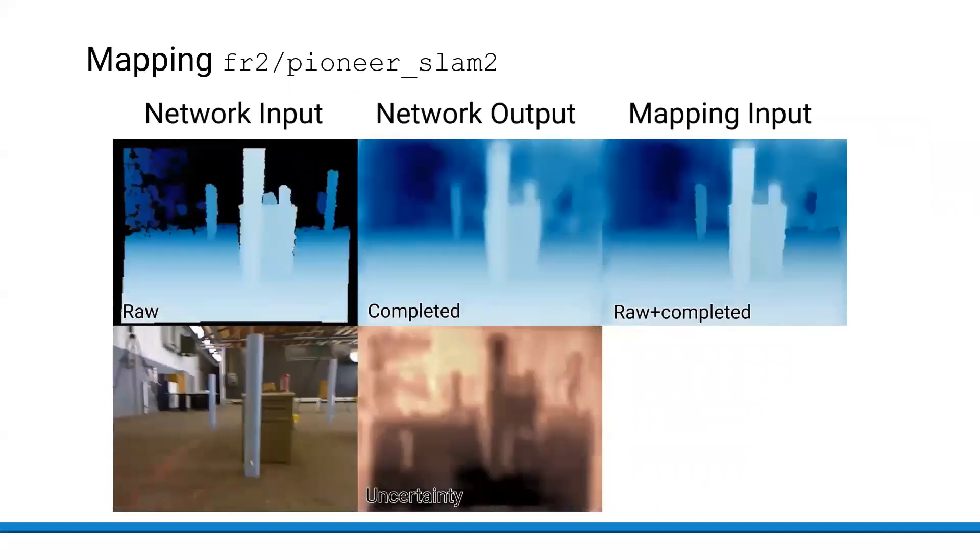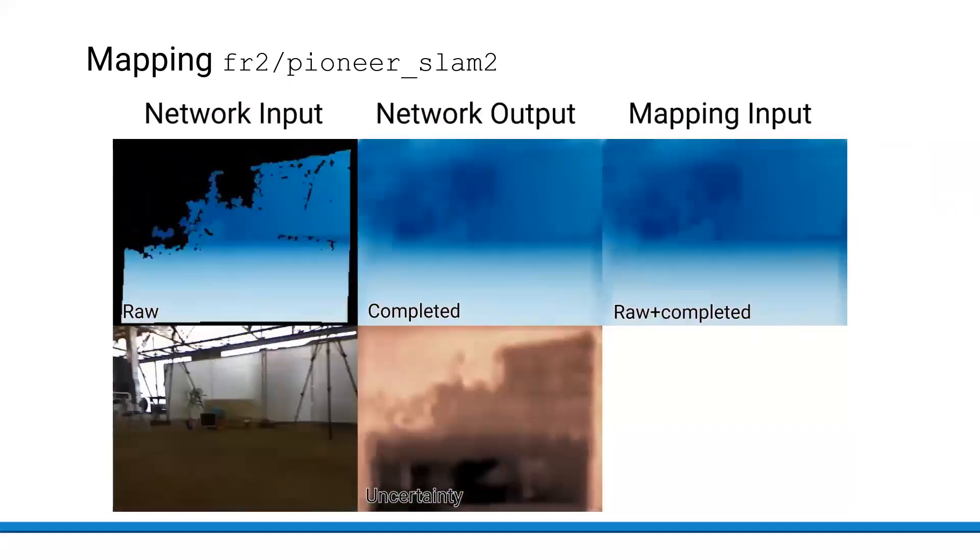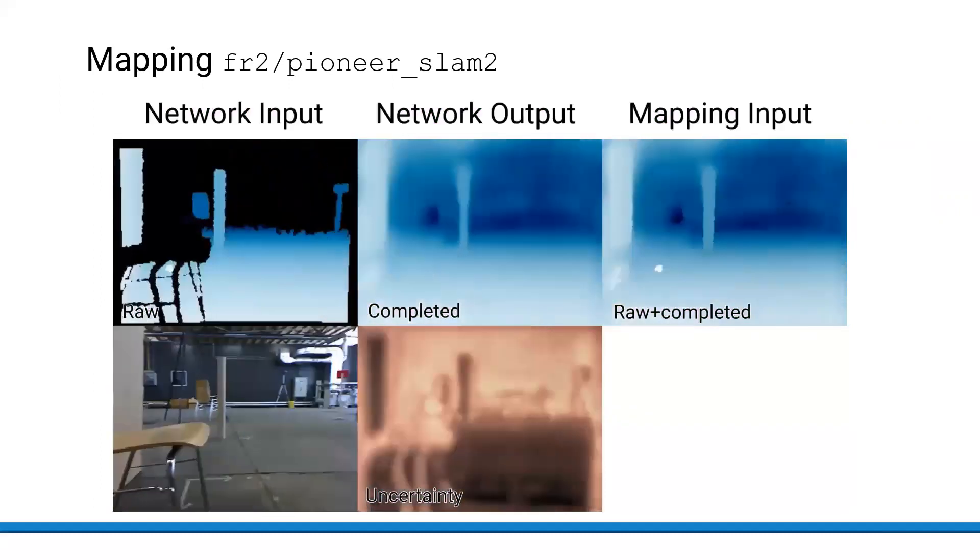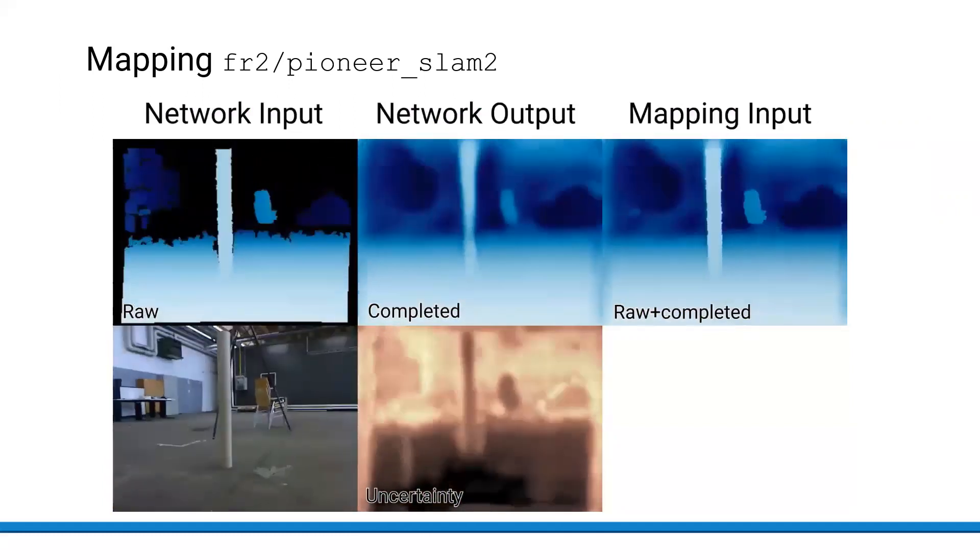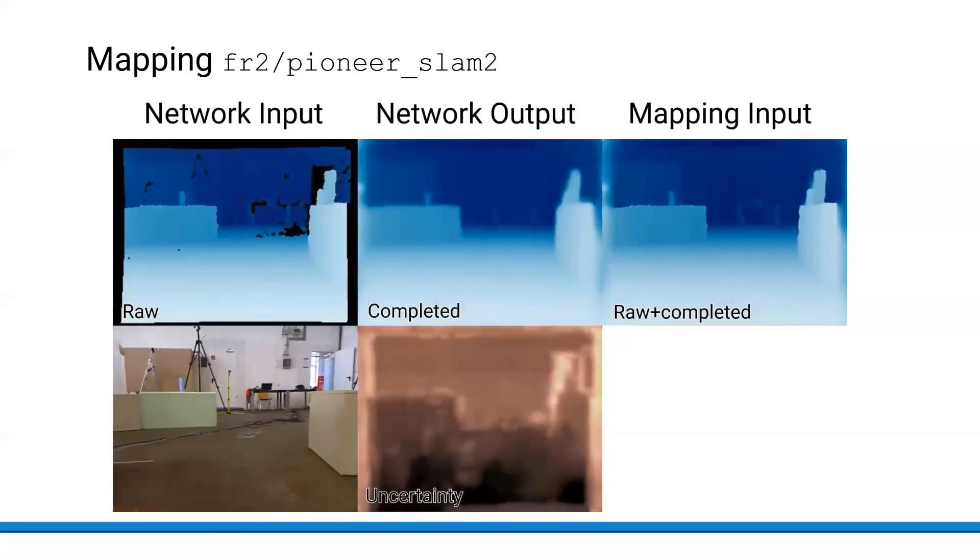On the left, we can see the raw depth and RGB images passed through the probabilistic depth completion network, in the middle the completed depth and depth uncertainty obtained from the network, and on the right the combined image serving as input for occupancy mapping.